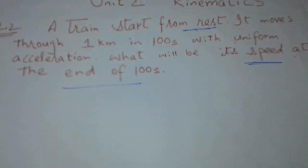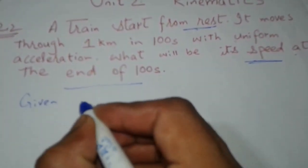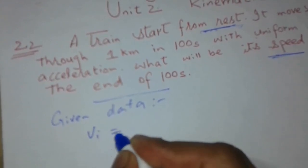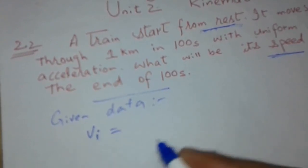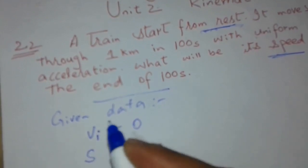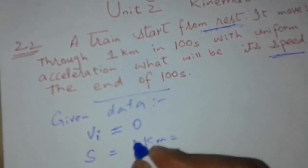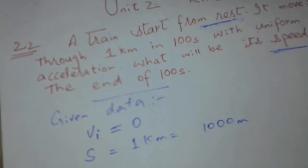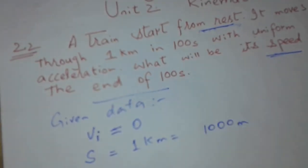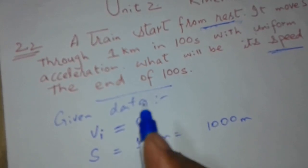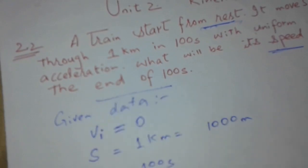Now, the given data: initial velocity vi is zero because the train starts from rest. Distance s is 1 kilometer, which we convert to 1000 meters. Time t is 100 seconds. What we have to find is the final velocity vf.